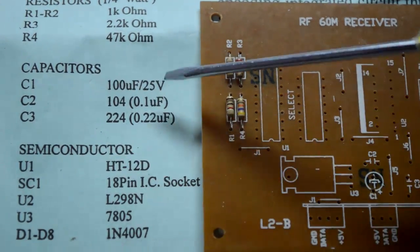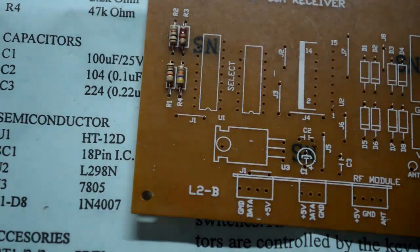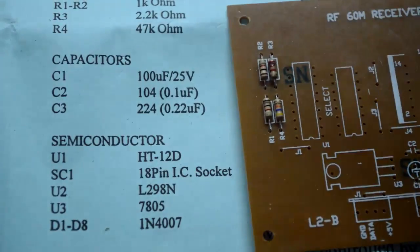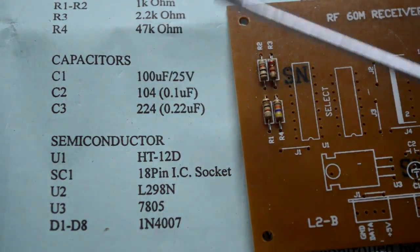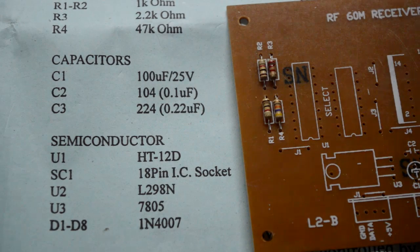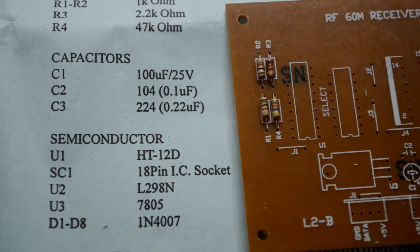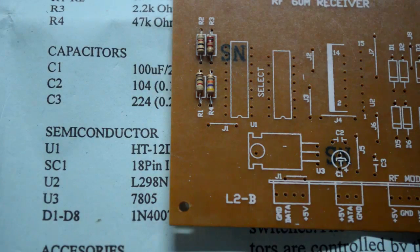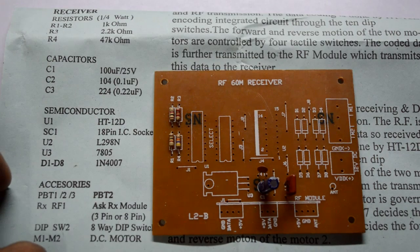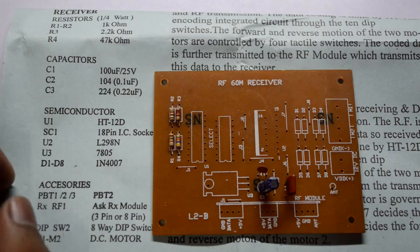As you can see we have soldered all the four resistors. Now the next thing we have to do is take the three capacitors and solder them in the right place. So here we go, this is C1, C2 and C3. C1 is basically 100 microfarad, C2 is 104, and C3 is 224. Go ahead in your components and find these three capacitors and solder them in the right place. Here we go, we have completed with the capacitors.